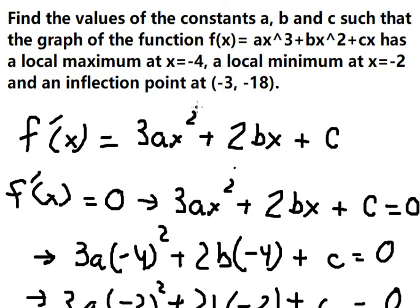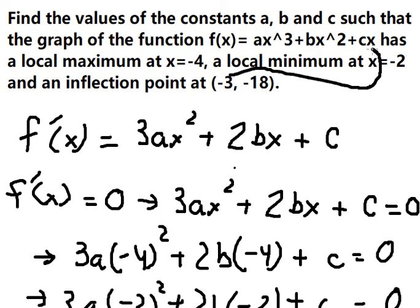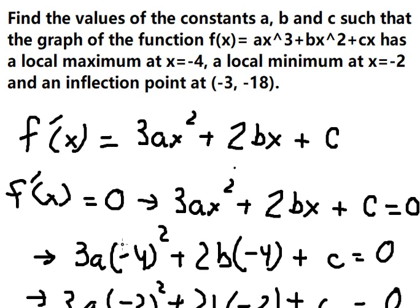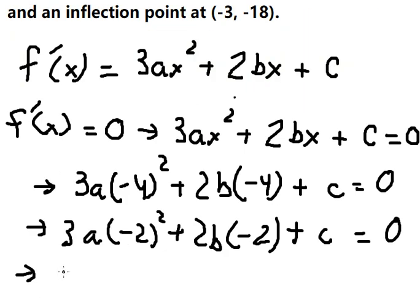For the inflection point, we know that the point is on the graph, so we substitute s = -3 and f(s) = -18 into the original function. This gives us the third equation. So we now have three equations to work with.